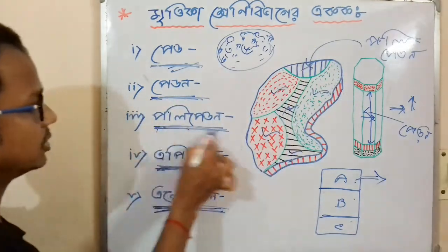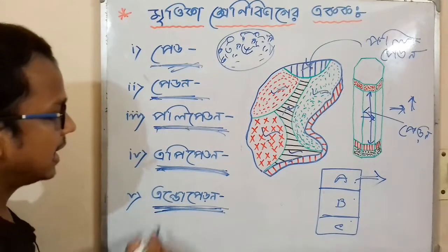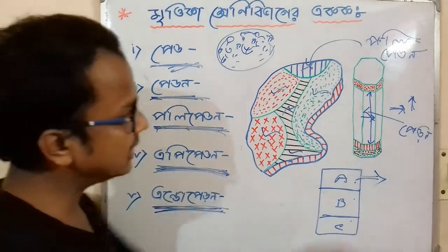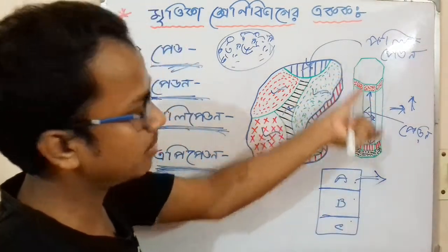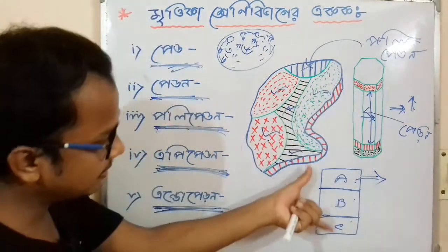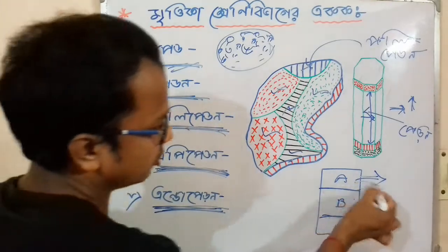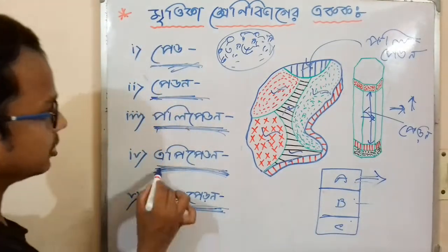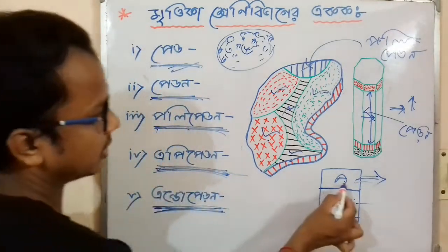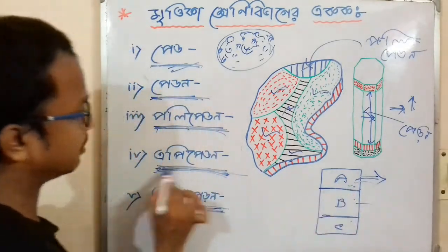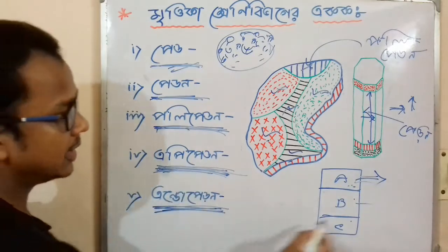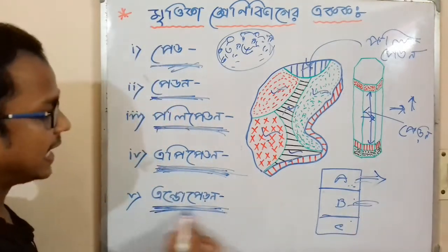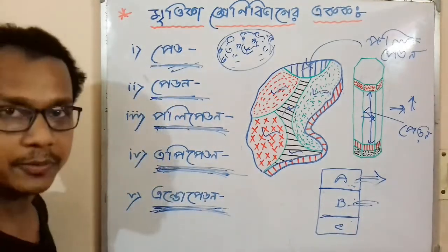Next is Epipedon. The type of the soil horizon is A, B, C. This one is Epipedon and this one is Endopedon.